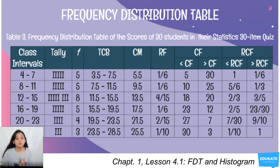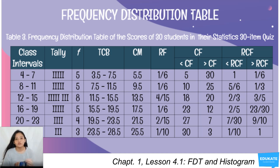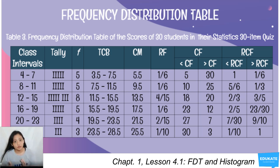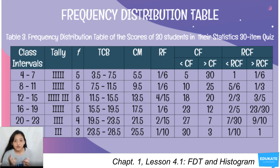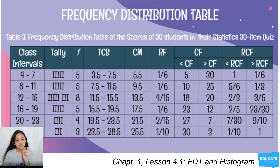True class boundaries (TCB) are obtained by subtracting 0.5 from the lower limit and adding 0.5 to the upper limit of each class interval. For the first interval, 4 to 7: the TCB is 3.5 to 7.5. A helpful shortcut: the upper TCB of one row becomes the lower TCB of the next, so just add the class size — 7.5 plus 4 gives 11.5, and so on.